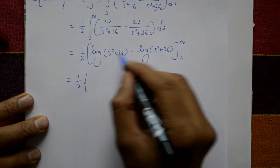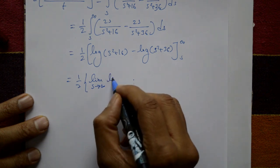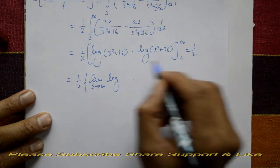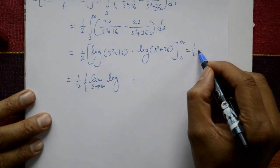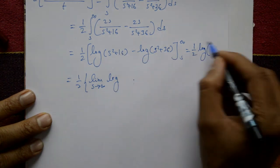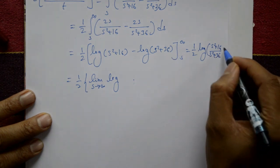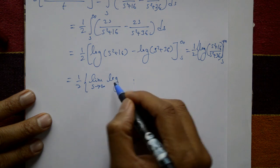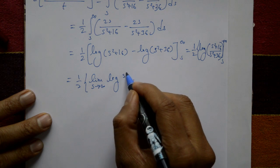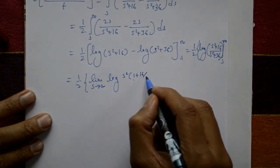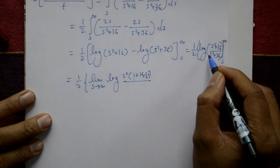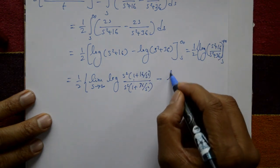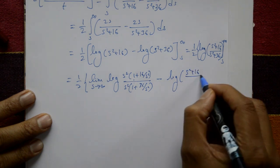Using log(a) minus log(b) equals log(a/b), this becomes one-half times log[(s² plus 16) over (s² plus 36)] with limits s to infinity. Taking the upper limit as s tends to infinity: take s² common from numerator and denominator, giving log[(1 plus 16/s²) over (1 plus 36/s²)]. As s tends to infinity, 16/s² and 36/s² both go to zero, leaving log(1 over 1) equals log(1) equals 0. For the lower limit, substitute s: log[(s² plus 16) over (s² plus 36)].